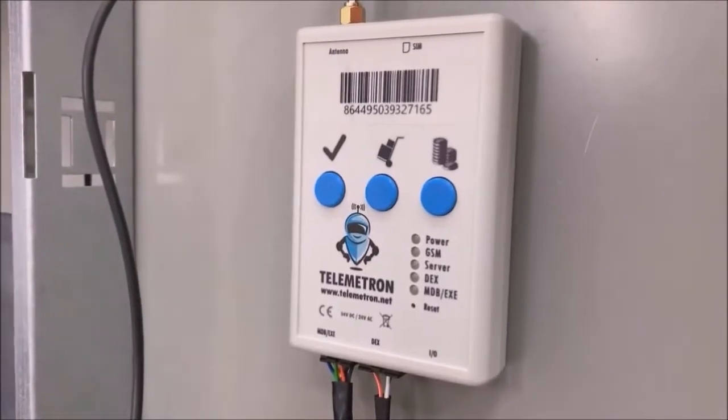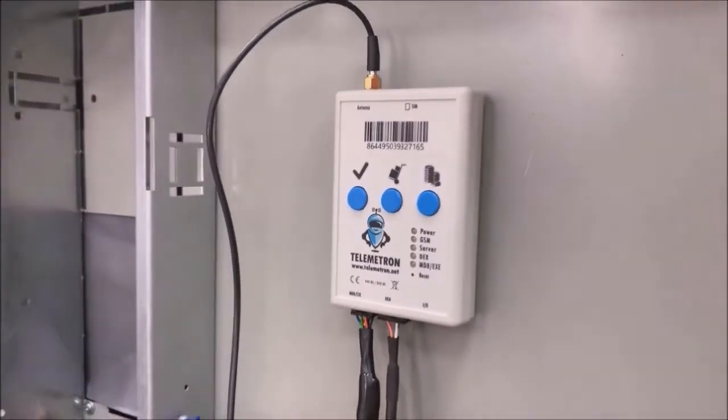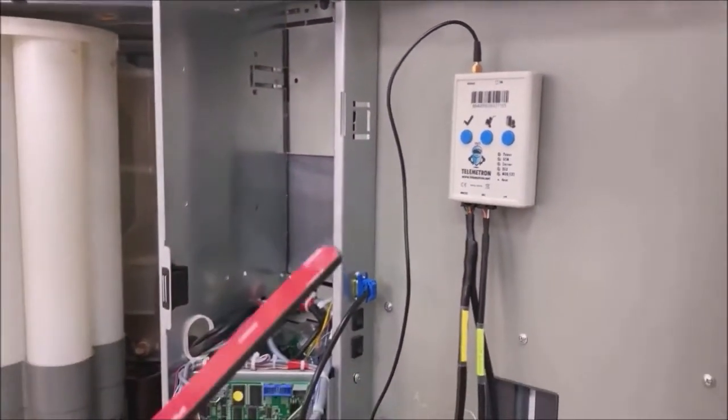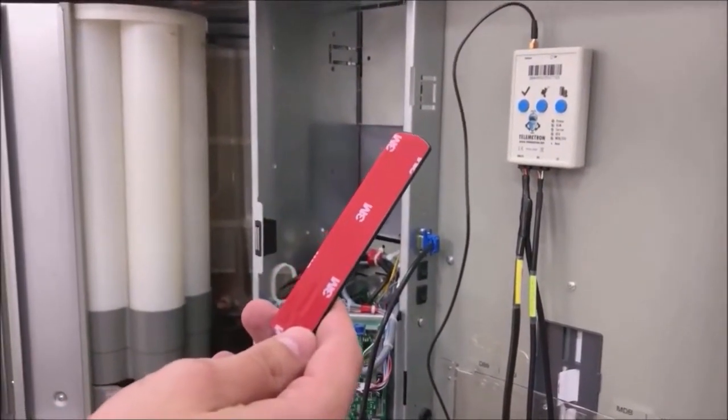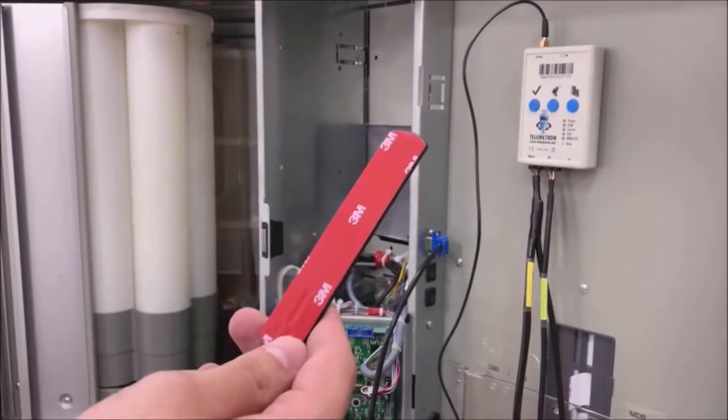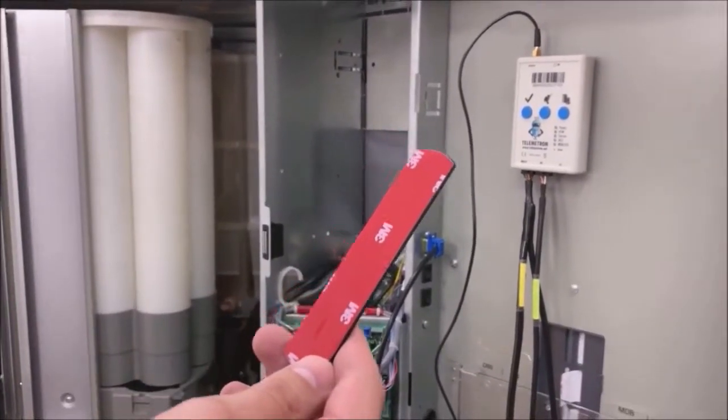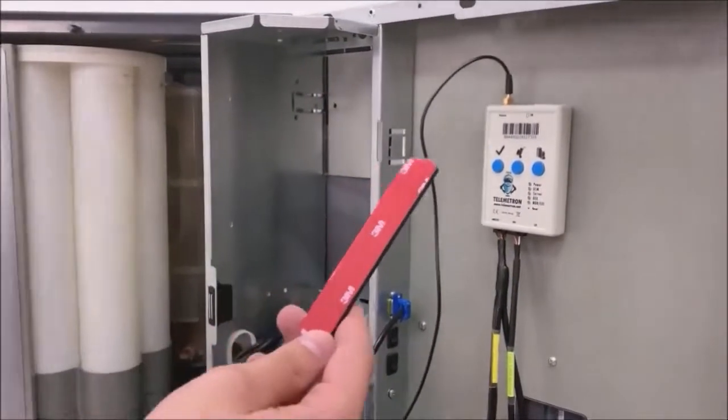We strongly recommend placing the antenna on the roof of the machine so that the metal case does not shield the signal. In places with high level signal, the antenna can be put inside the machine. The antenna is mounted with double-sided tape which is under a protective film.